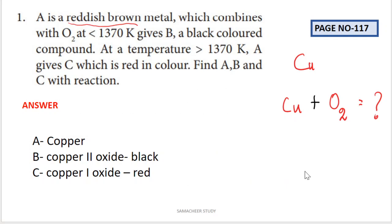First question: A is a reddish brown metal which combines with oxygen at less than 1370 Kelvin gives B.